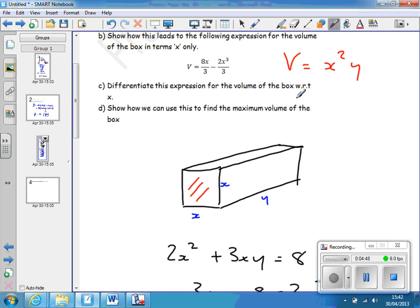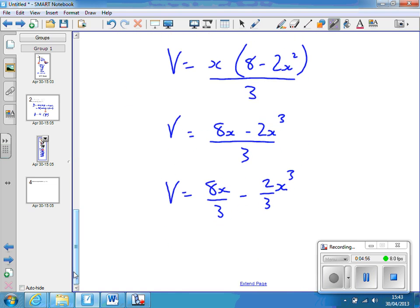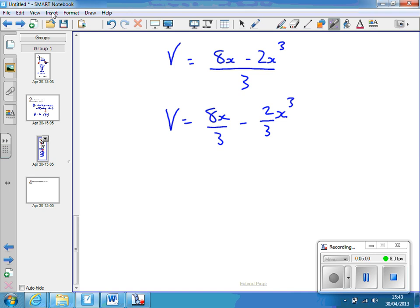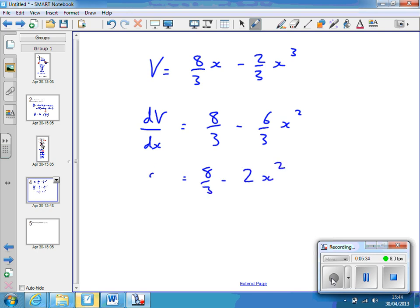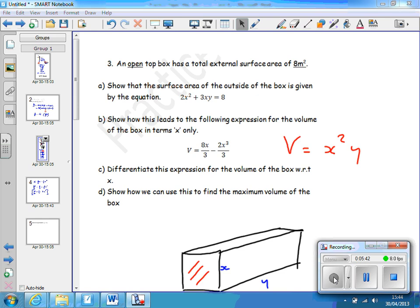Differentiate this expression for the volume of the box with respect to x. So I've just got to differentiate this with respect to x. Think of it as just 8 thirds of x minus 2 thirds of x cubed. So to differentiate that, I've used the notation dv by dx. The differential of volume with respect to x is 8 thirds, because the x disappears, minus, bringing the 3 down, 3 times 2 is 6 thirds x squared, and 6 over 3 is 2. So we end up with this for an expression for the differential. So that's part c done.